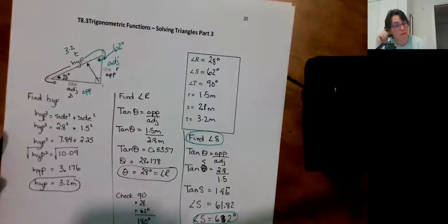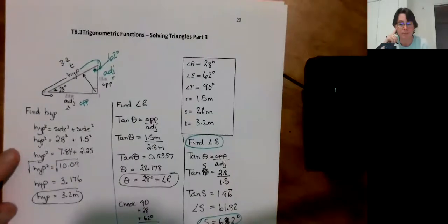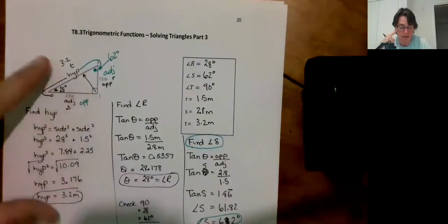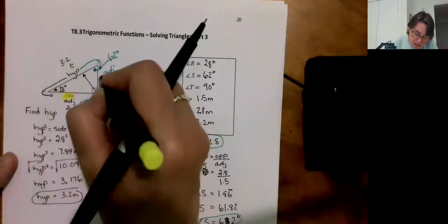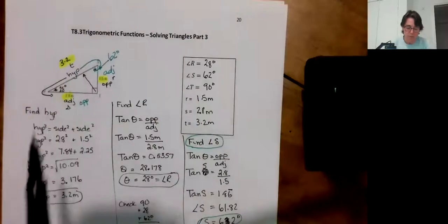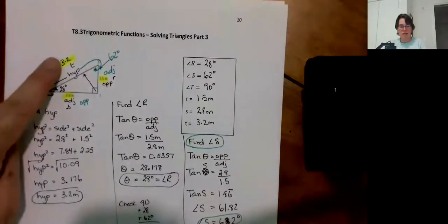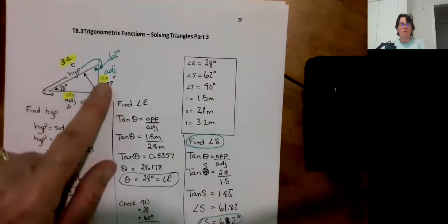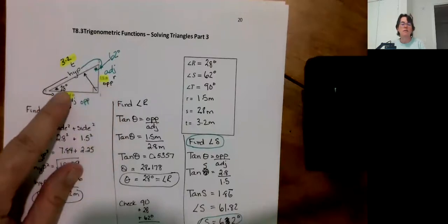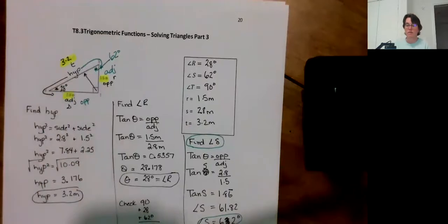Remember, you should always check opposites. Biggest angle, opposite biggest side. So if I highlight my sides, 3.2 is the biggest side. It's across from the biggest angle. And 1.5 is the smallest side. And it is across from 28 degrees, which is my smallest.